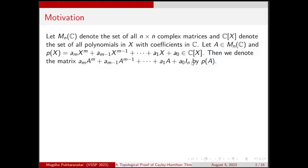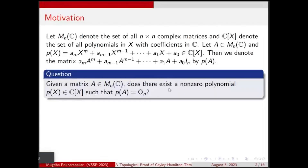We define P(A) by substituting A in place of X in the polynomial P, giving A_m·A^m + ... + A_1·A + A_0·I, where I denotes the identity matrix. We can then ask: given a matrix A in M_n(C), can we find a polynomial P such that P(A) is the zero matrix? The obvious answer is to take the zero polynomial, but that is the trivial case.